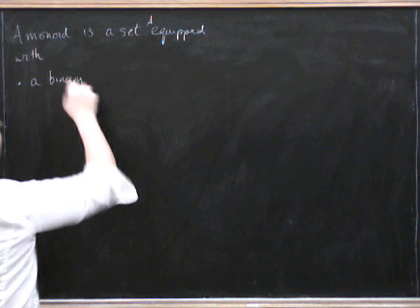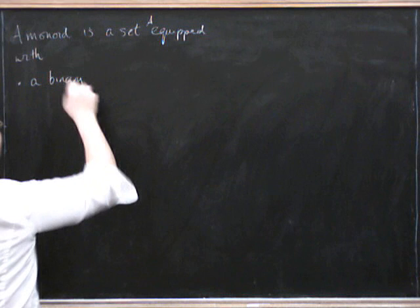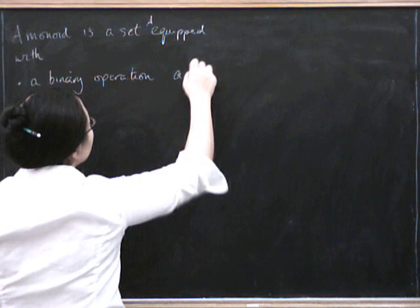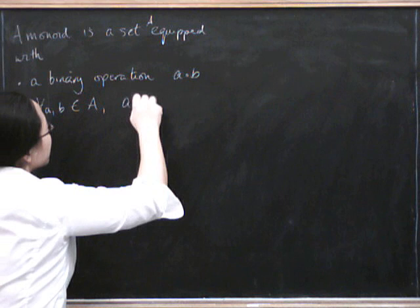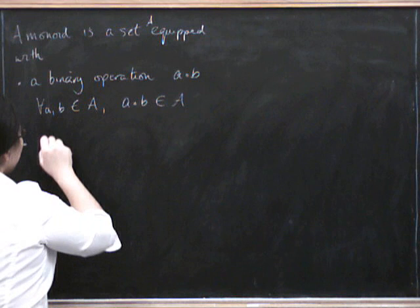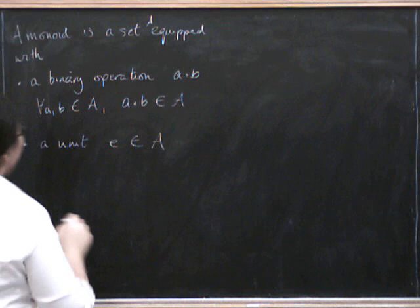it's got a binary operation, which we might write as things like, for every A and B, we have an A composed of B. So for all A and B in A, we have some element A, B, in A. We also have a unit object, so we have a unit, which we could call E, which is an object of A. And then we have associativity and unit axioms.